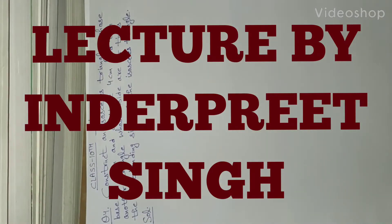Students, today we shall do question number 4 of exercise 11.1, class 10th maths. The statement is: construct an isosceles triangle whose base is 8 centimeters and altitude 4 centimeters, and then another triangle whose sides are 1½ times the corresponding sides of the isosceles triangle.